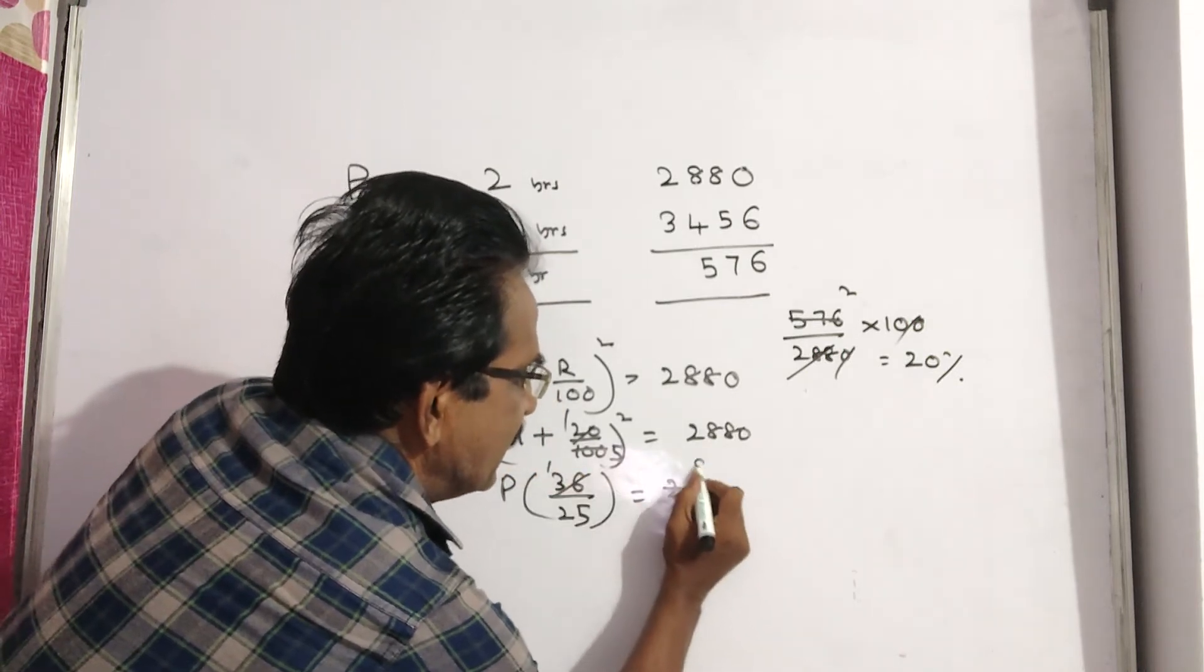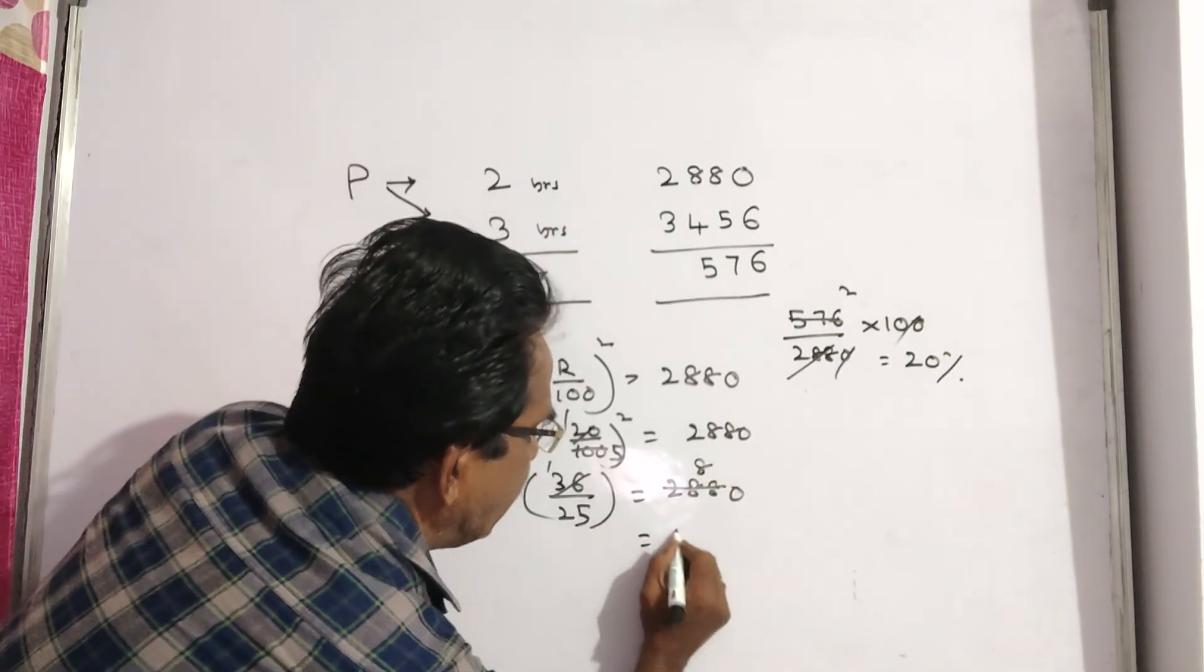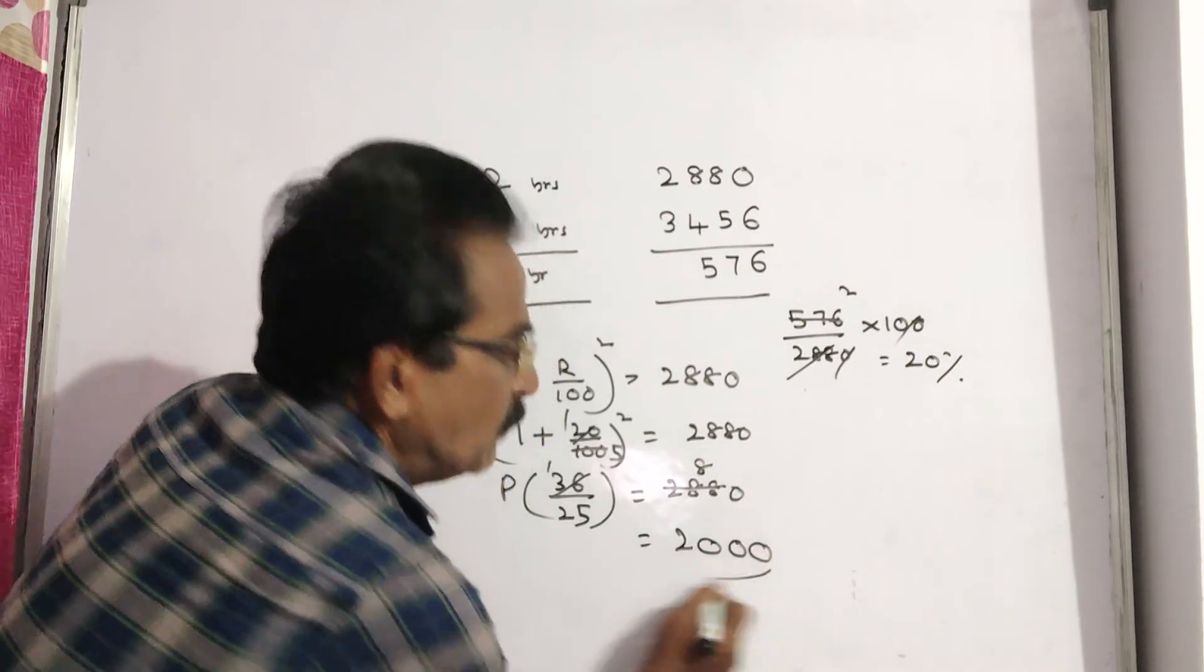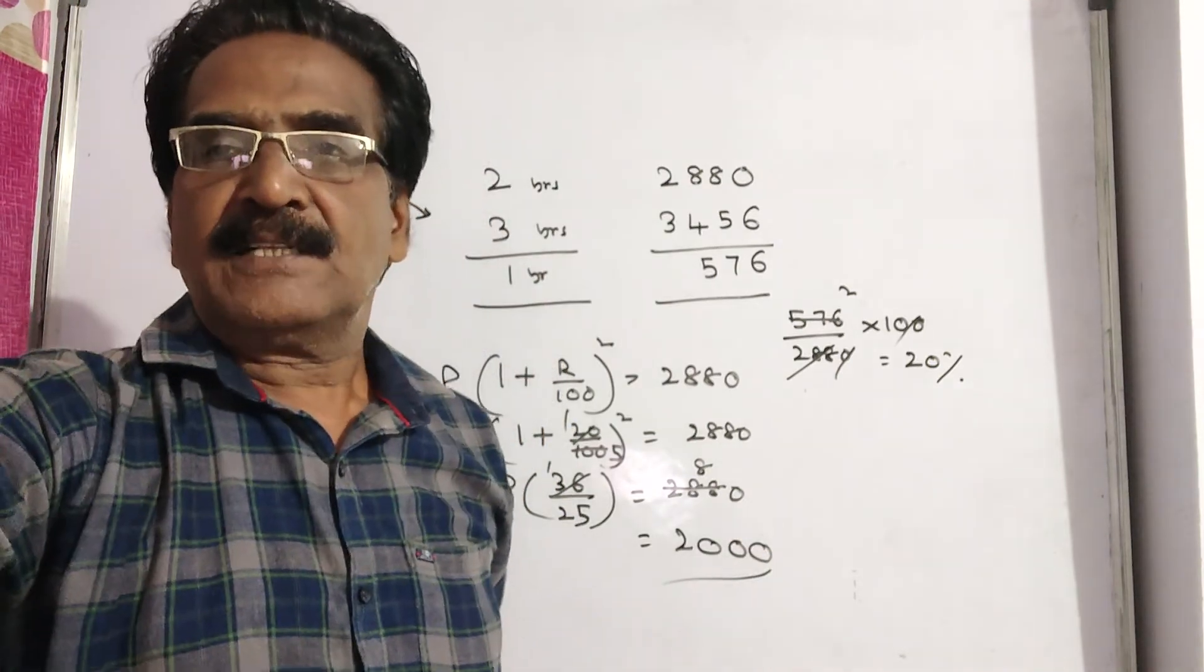36, 8's, 80, 25, 20, 80, 2000. 2000 is the principal friends. Thank you.